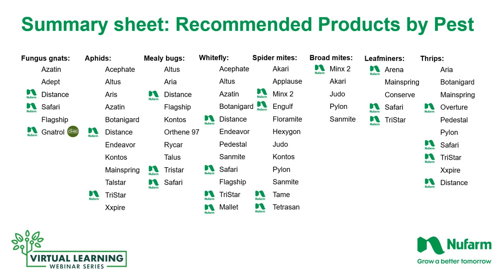We're going to begin at the end — using this summary sheet of recommended products by pest to start the discussion, since there's just so much information to cover. This page gives you the pests covered in this discussion, the control products recommended by independent trials, and the label recommendations for each product on the list. We'll start with root problems, move through the plant, and end at the flowers. As always with New Farm, if you have a specific pest problem not mentioned here, call or email us at the listed web address — this slide will be sent again at the end of the presentation.